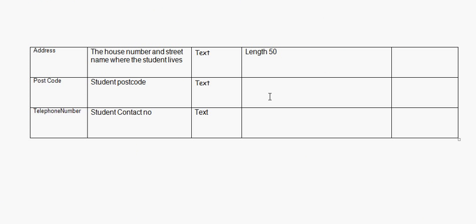For the postcode field, I want to enforce a specific format. Most postcodes consist of two letters, two numbers, a space, one number, and two letters. So the input mask format is going to be: two letters, two numbers, a space, one number, and two letters. Let's see how to implement this in Access database.